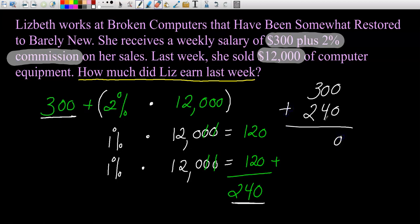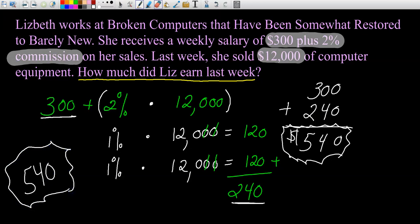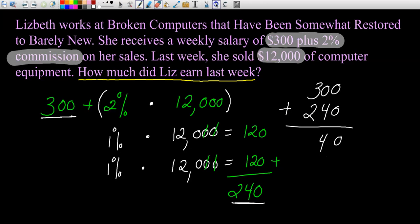Then I need to add on this 300, that's her weekly salary. So it's the 300 weekly salary plus the commissions. So 300 plus 240, zero plus four is four, three plus two is five. So she earned $540 last week.